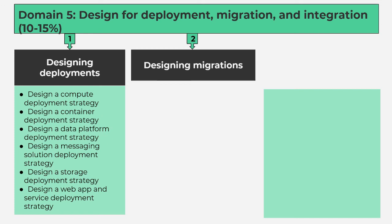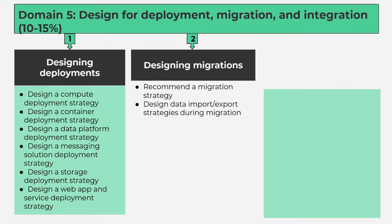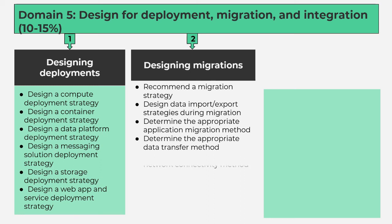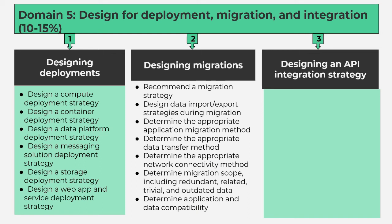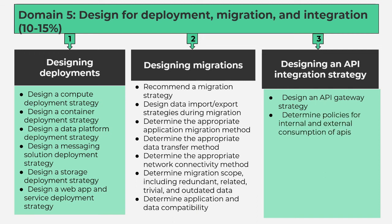Number 2, Designing Migrations contains 7 subtopics: recommend a migration strategy; design data import or export strategies during migration; determine the appropriate application migration method; determine the appropriate data transfer method; determine the appropriate network connectivity method; determine migration scope including redundant, related, trivial, and outdated data; determine application and data compatibility. Number 3, Designing an API Integration Strategy contains 3 subtopics: design an API gateway strategy; determine policies for internal and external consumption of APIs; recommend a hosting structure for API management.